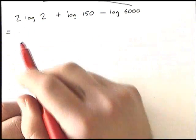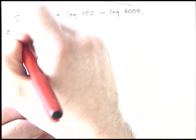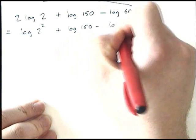I want to take this a term at a time. First thing I want to do is get rid of the power here. Using the power rule in reverse, I can write that question as log 2 squared. Keep on my rest here. Log 150, take away log 6000.